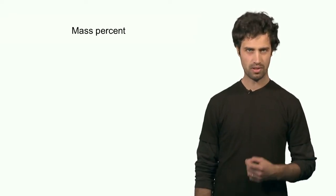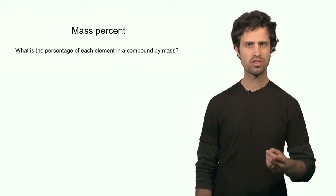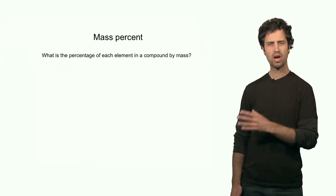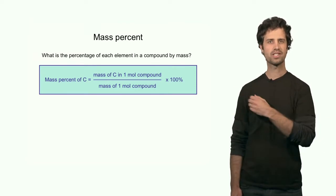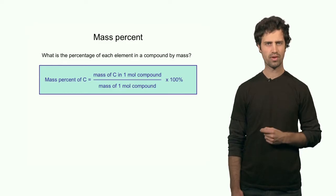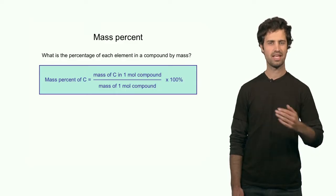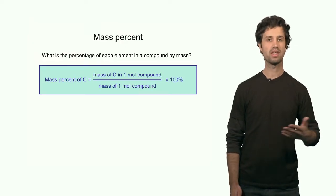In a previous segment we learned about the quantity of molar mass. In this segment we'll be talking about another mass related quantity: the mass percentage. The mass percentage is a measure of the contribution of an element to the total mass of a compound. For instance, the mass percentage of carbon in a compound is the mass of carbon in one mole of the compound over the mass of one mole of the compound, times 100%. It is a way to express the relative amounts of elements in a compound.